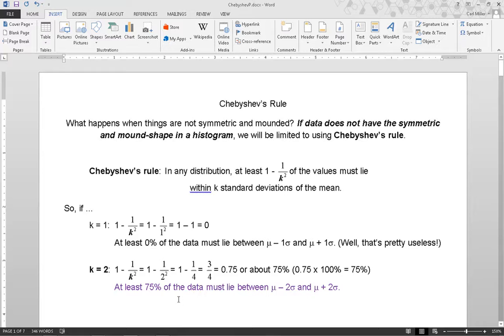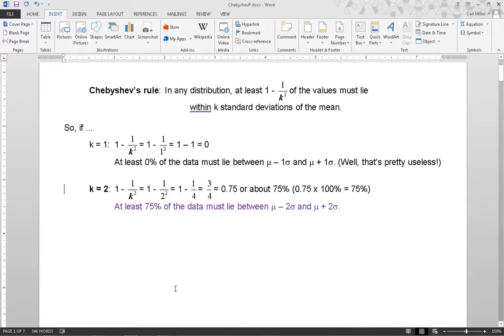Consider k equal to 2. At least 1 minus 1 over k squared equals 1 minus 1 over 2 squared which is 1 minus 1 over 4 which equals 3 fourths or 0.75 or about 75%. At least 75% of the data must lie between mu minus 2 sigma and mu plus 2 sigma or within two standard deviations of the mean.